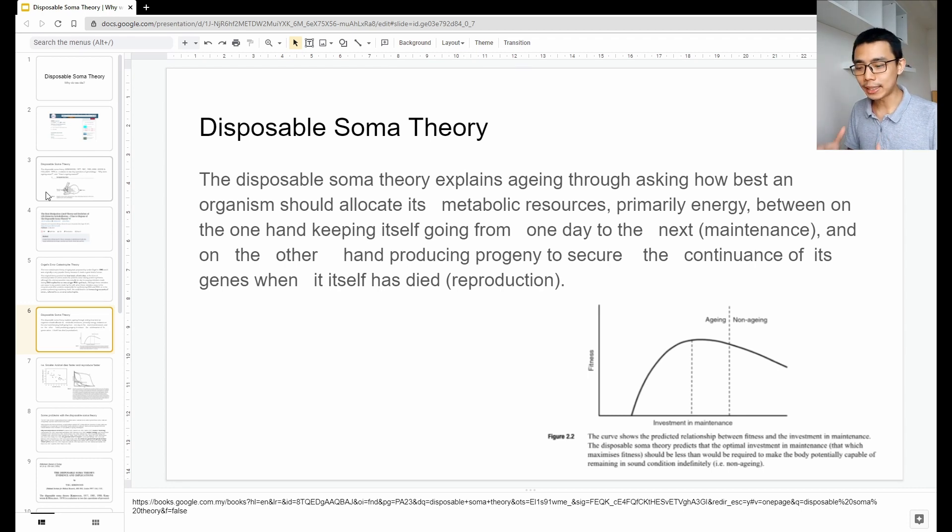Disposable soma theory explains that for animals, such as the smaller animals that are going to be killed by external forces, they will most likely be spending their energy trying to reproduce and pass on their genes rather than actually maintaining their body because you only have so much resources. What would you optimize for? So, if you are a smaller animal like a rabbit, it is likely that you spend all of your energy trying to reproduce because it is much easier to pass on to 10 offspring and one of them is going to survive eventually rather than trying to maintain your body because it is very, very expensive to do that.